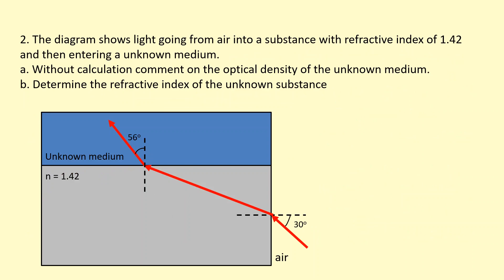The diagram shows light going from air into a substance with a refractive index of 1.42, then entering an unknown medium. Without calculation, comment on the optical density of the unknown medium. Looking at this boundary, the angle of incidence is smaller than the angle of refraction, meaning the light bends towards the normal. Therefore, the unknown medium is more optically dense than the gray medium, so its refractive index must be higher than 1.42.